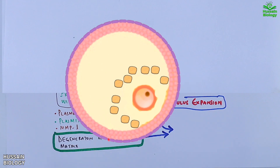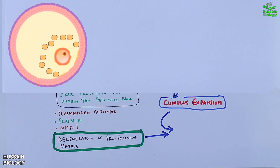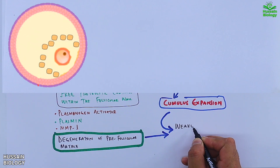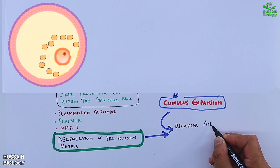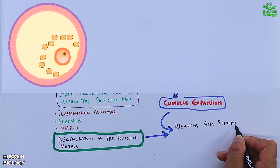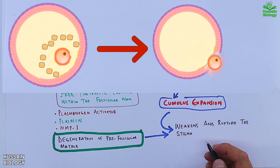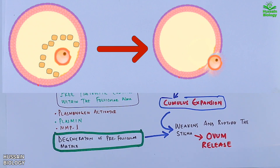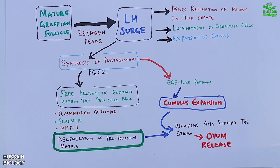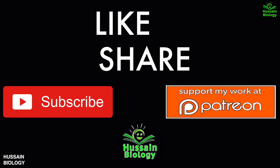All these events weaken and rupture the stigma of the egg, as shown in the diagram, from where the ovum is released. That concludes the ovulation process — this is how ovulation occurs.